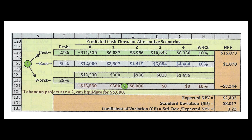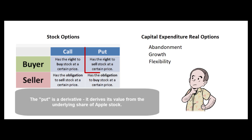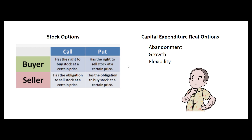For a risky project we can use decision tree analysis, staging the project so we can quit early if things go in a bad direction. Textbooks also discuss real options — analogous to stock options like buying a put to protect against a stock price decline. Real options in capital expenditures include: abandonment (quitting the project), expansion (building the factory slightly bigger than needed to allow growth), or flexibility (e.g., building a car plant for gas-powered vehicles but setting it up so it can easily be converted to electric vehicles).